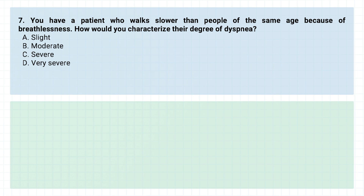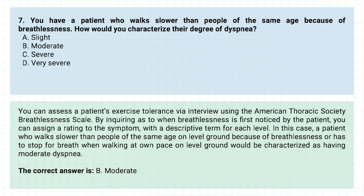Question number seven. You have a patient who walks slower than people of the same age because of breathlessness. How would you characterize their degree of dyspnea? A. Slight. B. Moderate. C. Severe. D. Very Severe. The correct answer is B. Moderate. You can assess a patient's exercise tolerance via interview using the American Thoracic Society Breathlessness Scale. A patient who walks slower than people of the same age on level ground because of breathlessness, or has to stop for breath when walking at their own pace on level ground, would be characterized as having moderate dyspnea.